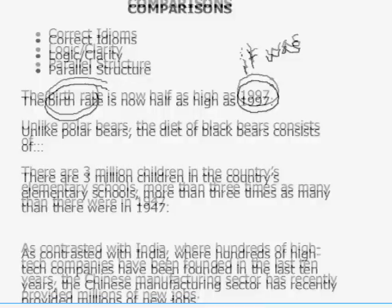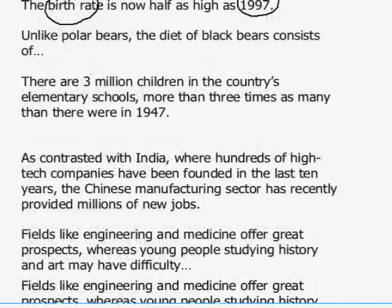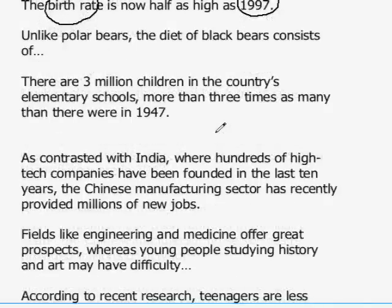Comparisons that begin with 'like' or 'unlike' are particularly tricky, going back to the modifying phrases we have just seen. For example: 'Unlike polar bears, the diet of black bears...' — we're comparing polar bears with the diet of black bears. That's wrong. We should compare polar bears with black bears, or the diet of polar bears with the diet of black bears.